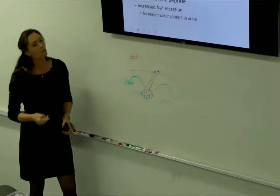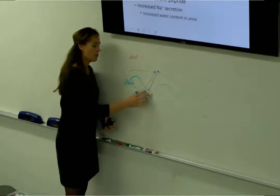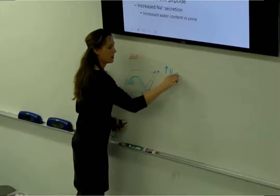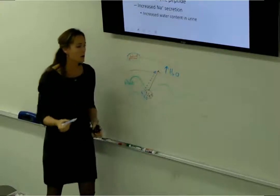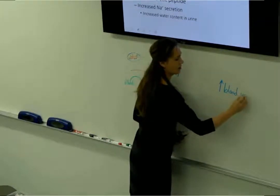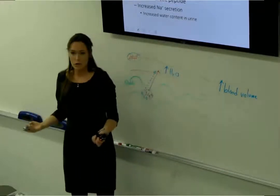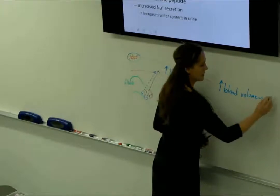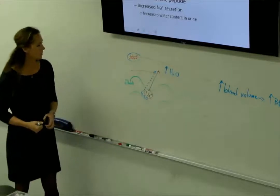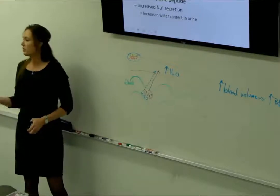Both aldosterone and antidiuretic hormone pump sodium and water, so we end up increasing water in the blood, increasing blood volume. Increased blood volume then translates to an increase in blood pressure. That's how those two work — they work exactly the same way, just for different reasons.